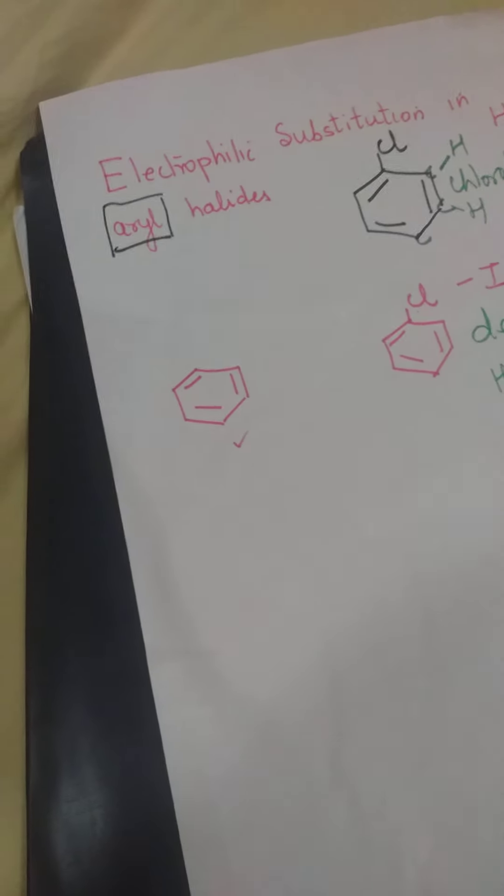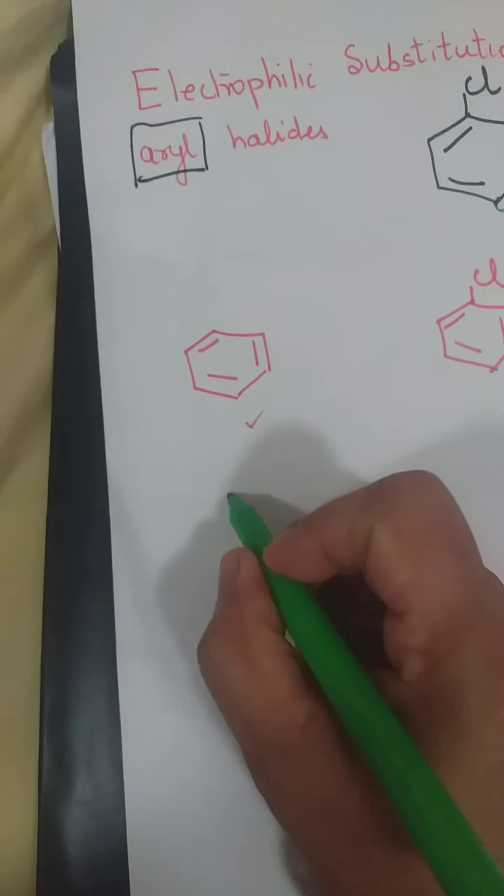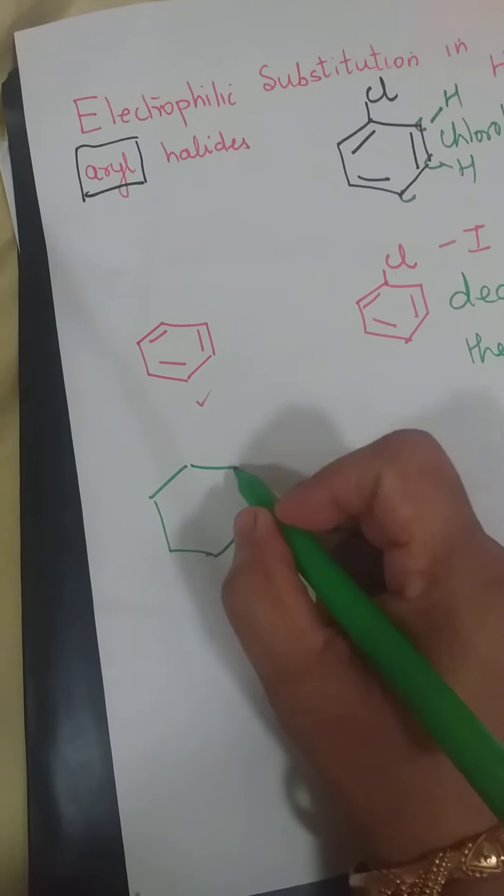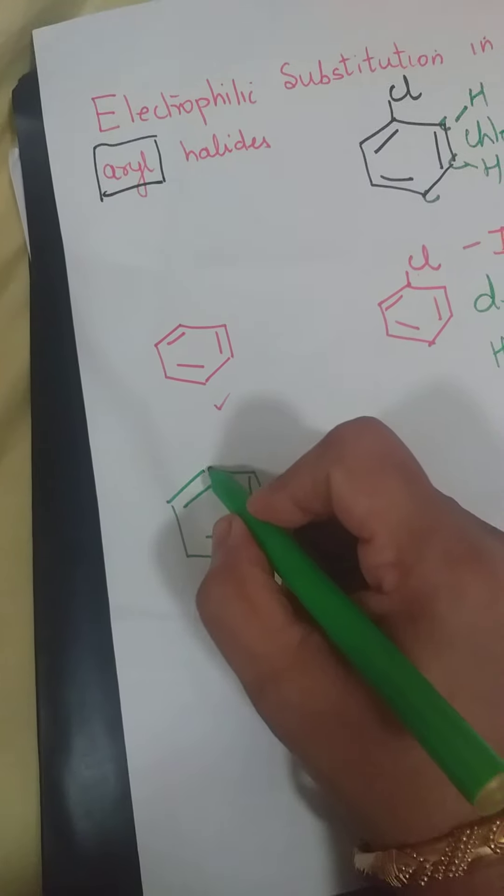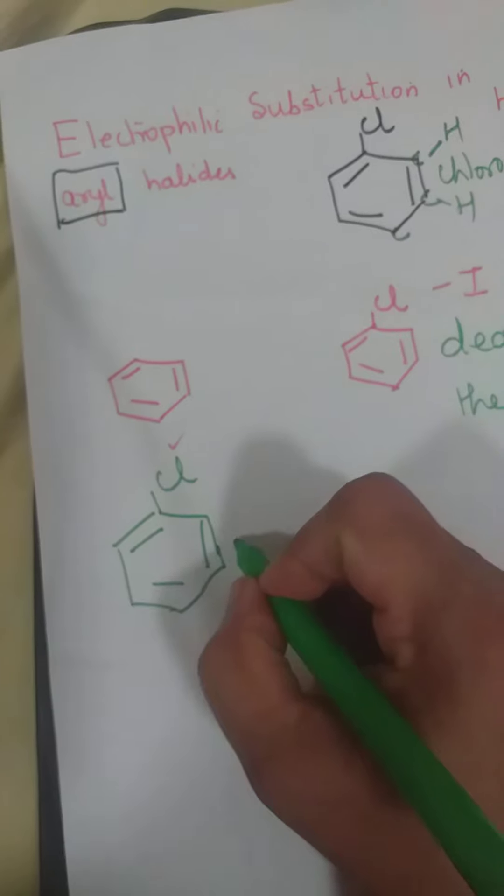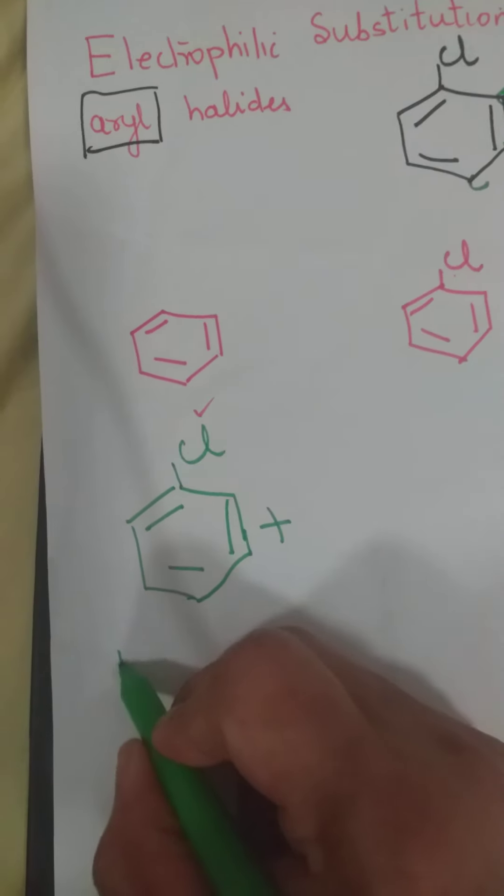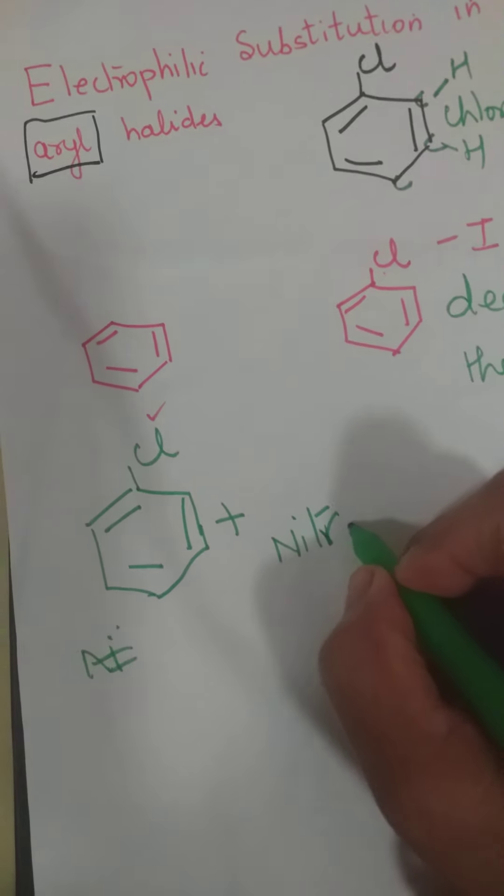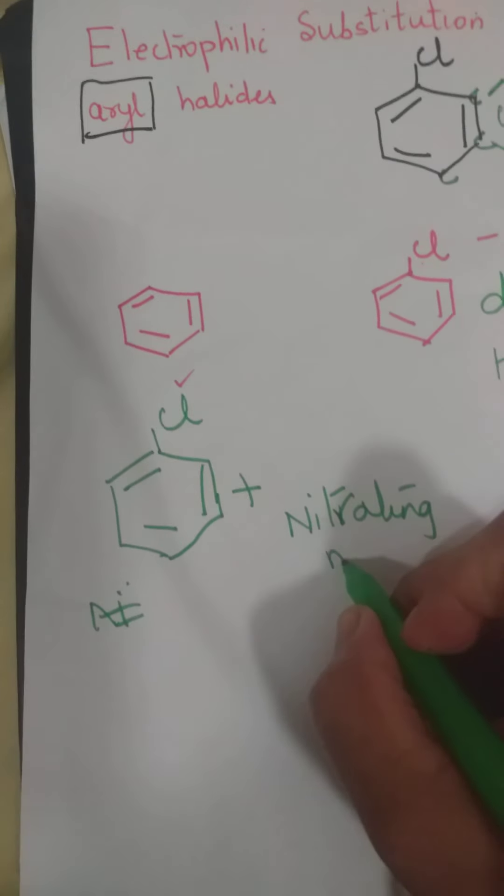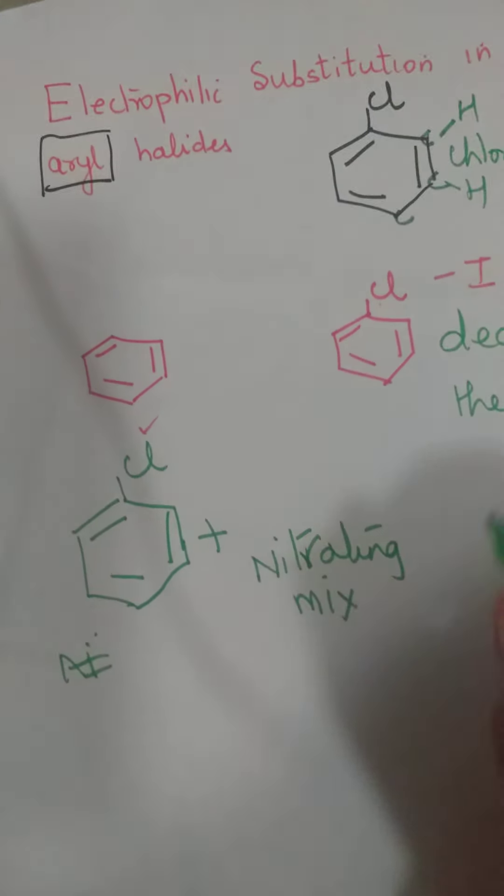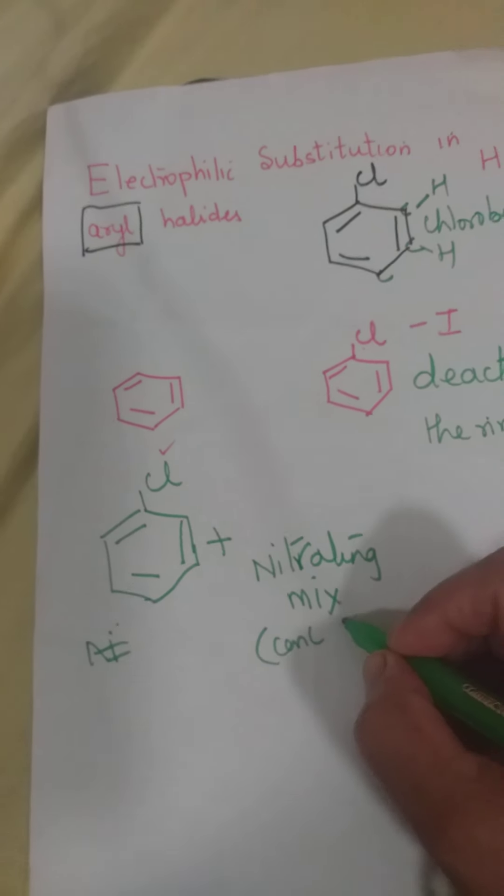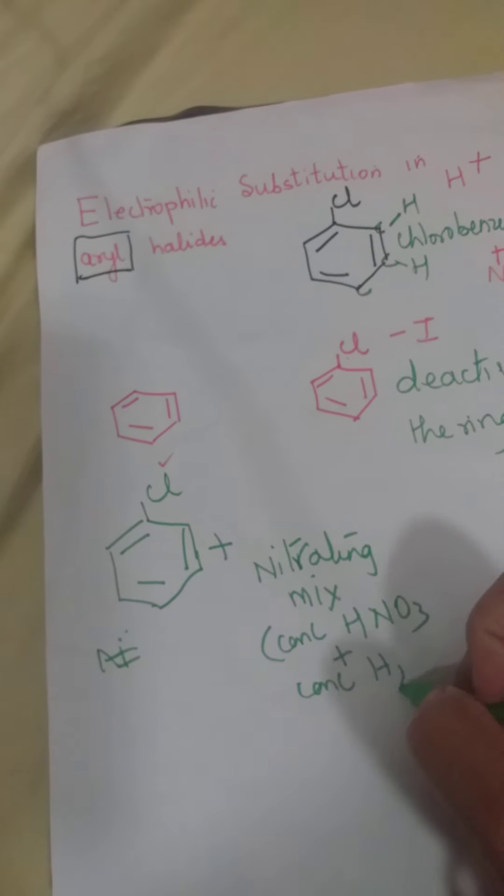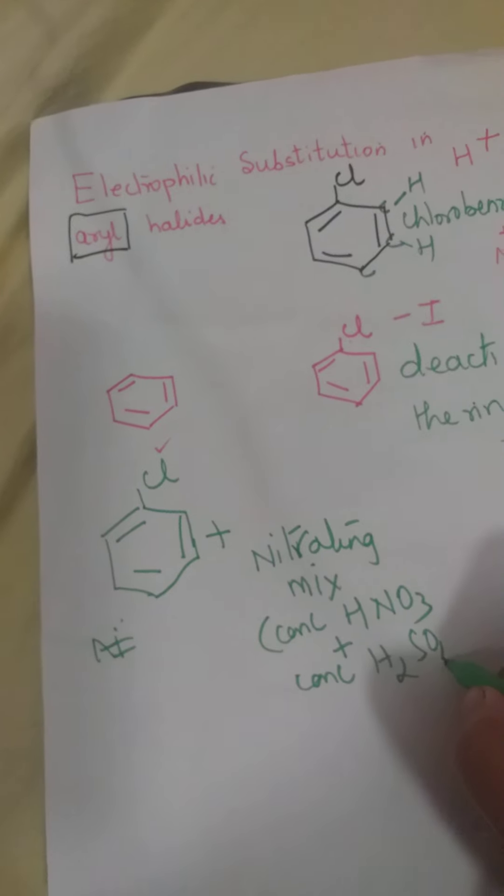Ab hum ek example dekhte hai, reaction ka. Kaisa hoga? Suppose I have chlorobenzene. Chlorobenzene hai mere paas. Aur, main isme dal rahi hoon. What is known as nitrating mixture? Kya dal rahi hoon? Nitrating mixture. Ab, sawaal yeh hai ki, what is a nitrating mixture?